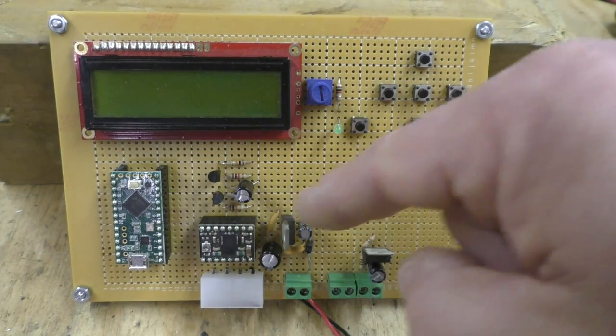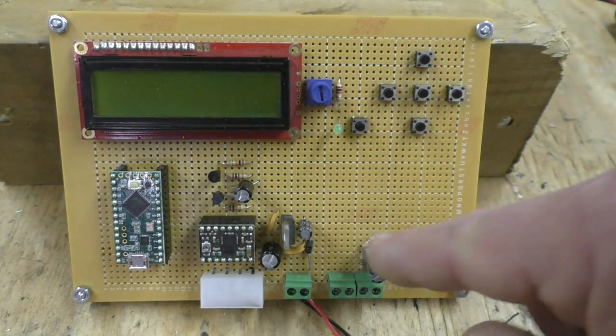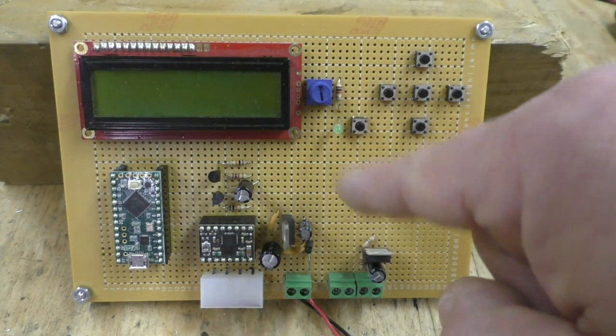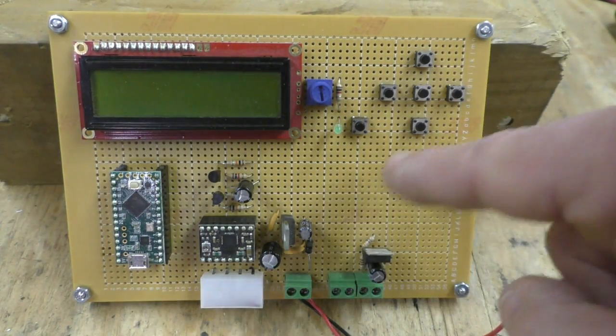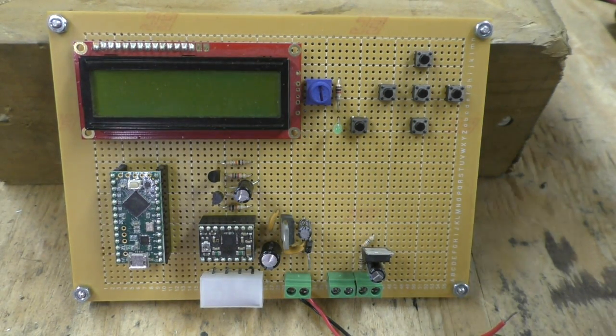Everything else is the same. I've got a Teensy LC running it, I've got the stepper motor driver, this is the circuitry for the calipers, and I've got two voltage regulators—one's for the whole circuit board and this one is for the calipers. Let me turn the power on here and I'll show you what we got.